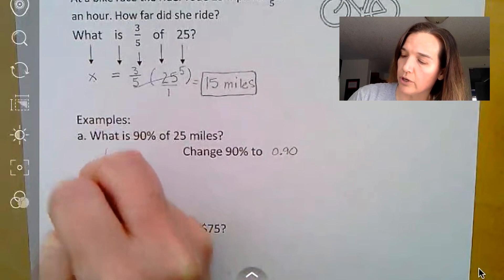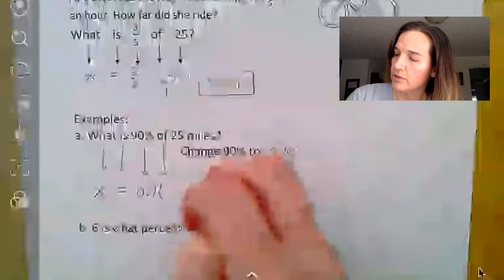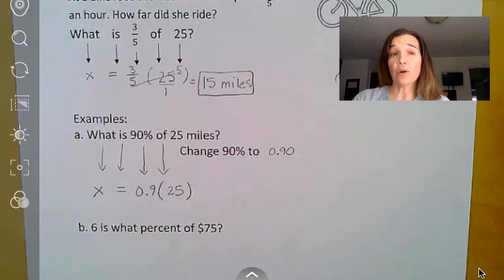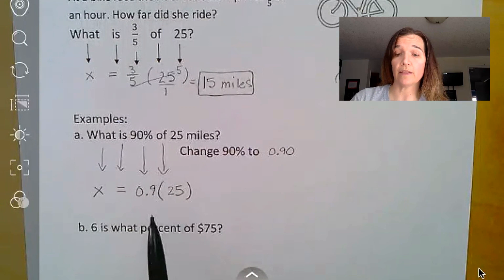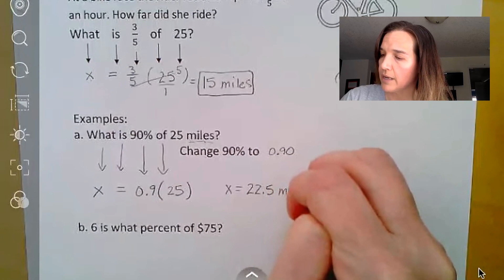So when it says what, again, that's what I don't know, so that's my x. It tells me is, that's my equal sign, 90%, we're going to use 0.9, of, means I'm going to use some multiplication, 25. And then we go ahead and multiply those. Again, x is already isolated, so all we need to do is multiply these two together to get our answer, and we end up with 22.5 miles.